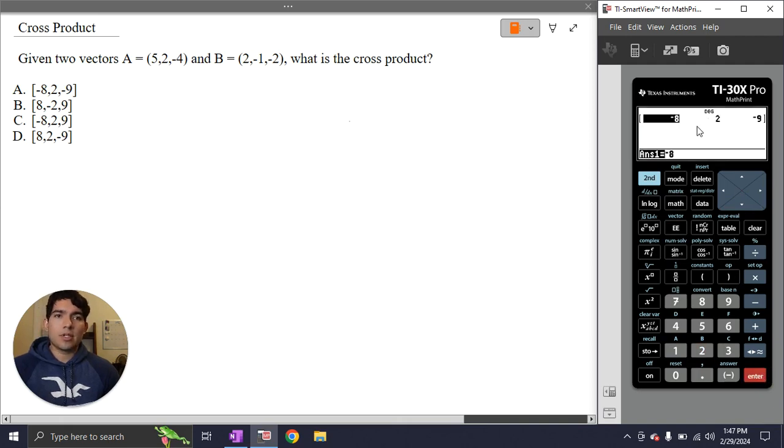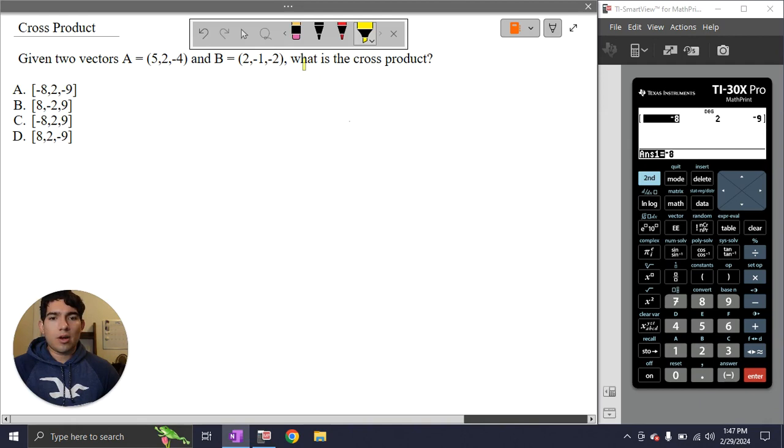And that gives us the cross product for the vectors that we put in. In this case, it's going to be negative 8, 2, negative 9. So if we take a look at our multiple choice, our answer is A.